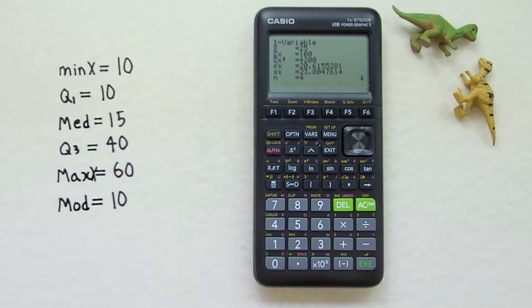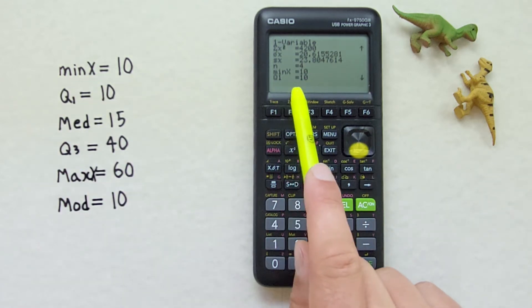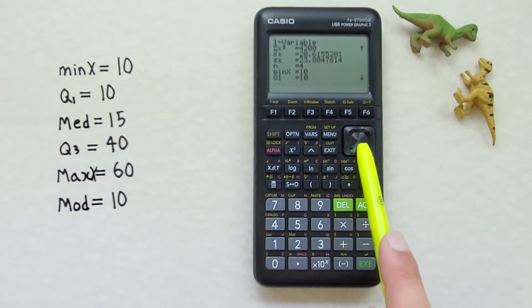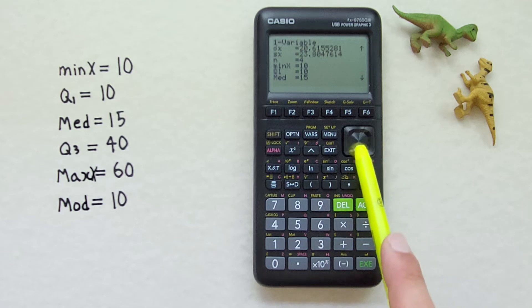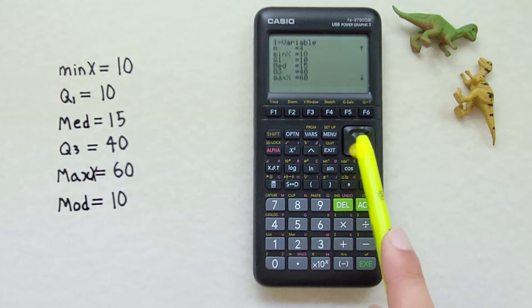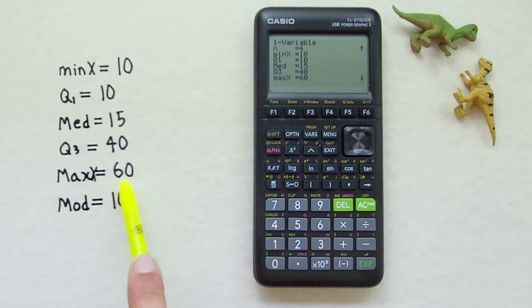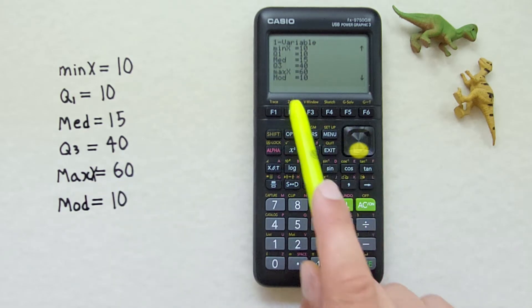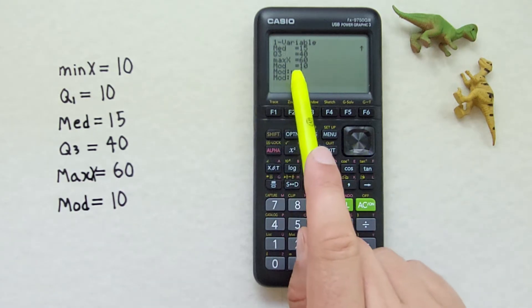And if we scroll down we see we get a min X of 10, a first quartile of 10, a median of 15, a third quartile of 40, a max X of 60. So that's our maximum value. A mode of 10. And if we continue to scroll down we get a mode N and mode F as well.